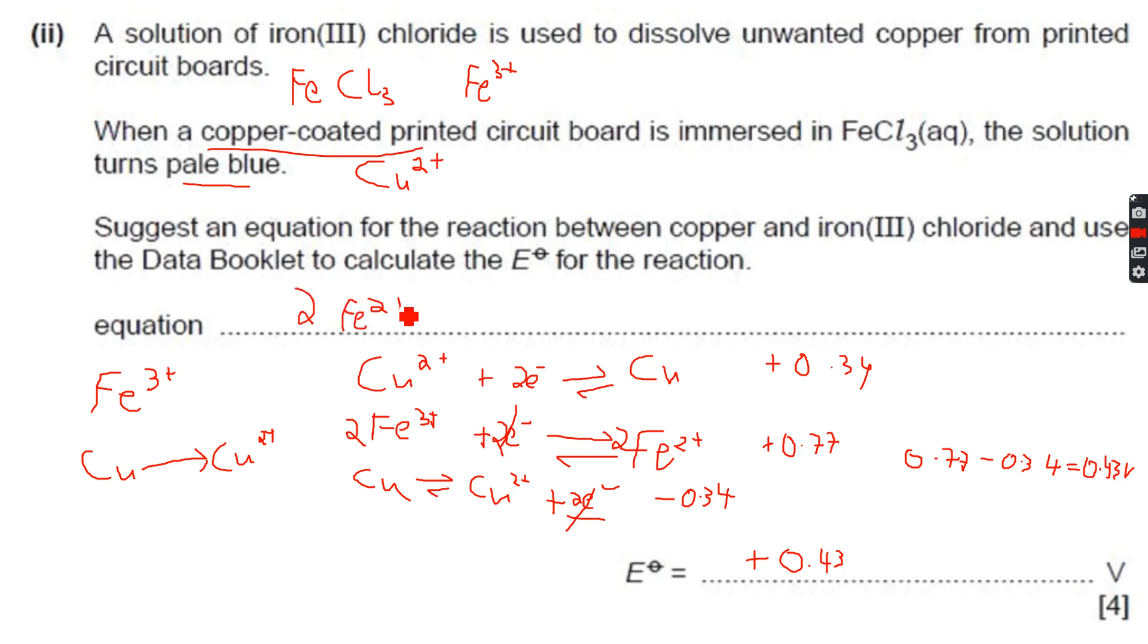Then the two electrons cancel out, so this becomes 2Fe3+ plus Cu gives 2Fe2+ plus Cu2+. You can see the charges are balanced - plus 6 on the left side, plus 6 on the right side, and the atoms are balanced.